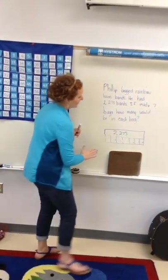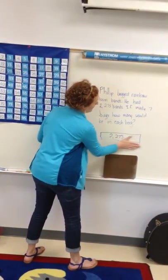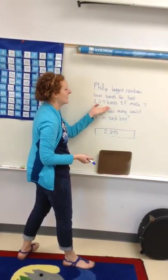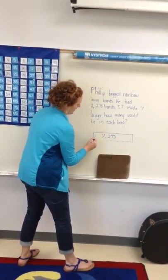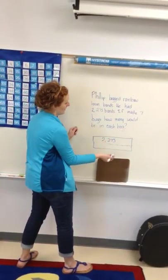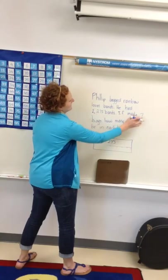So we start with what we have as the whole. This whole that he had is 2,275 bands. Now, it tells us that we need to put the total amount of bands into seven groups.